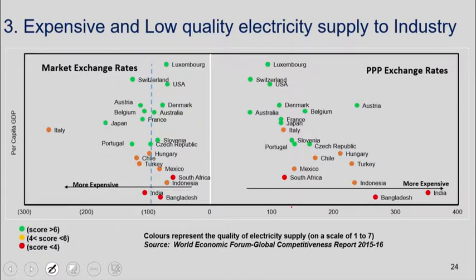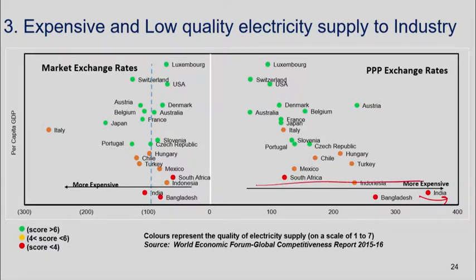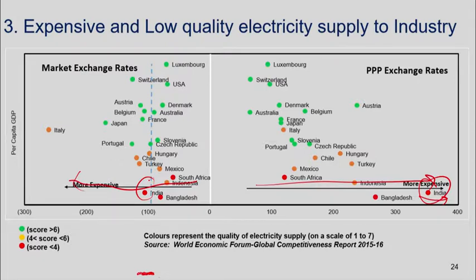If you measure industrial tariffs in PPP terms, India is the most expensive here. Even if you measure it at market exchange rates, India is in the middle. But what matters is not just the price but whether it's interrupted or uninterrupted power — the color of the dots tells you the quality of electricity supply. If you adjust the tariff by quality of power supply and continuity, you find that India has very high tariffs adjusted for quality.